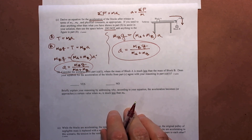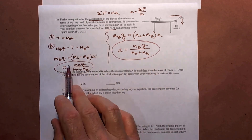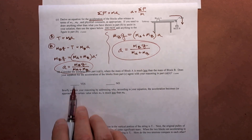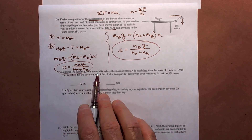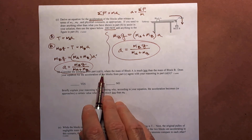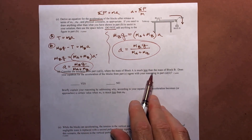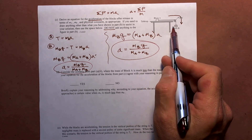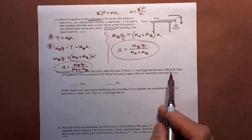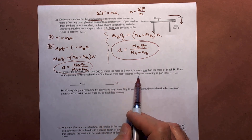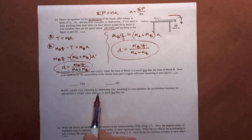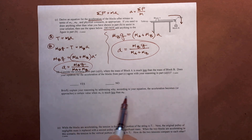It doesn't matter which approach you take — start with a second law statement, do the individuals with substitution and solve for A, or do the system and solve for A. Next, it asks us to consider the scenario from part A2 — where mA is much less than mB. Does your equation for acceleration agree with your reasoning in part A2? Briefly explain why, according to your equation, the acceleration approaches G.